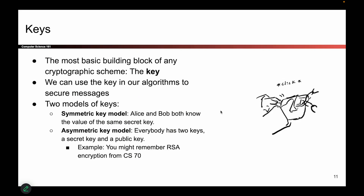The most basic building block in any scheme you'll ever see is something called a key. A key is simply a piece of data — a bunch of ones and zeros — and it's a secret value that we use to secure our messages. There are two ways to build keys. One is the symmetric key model, where Alice and Bob both have a secret key that nobody else knows. Alice knows it, Bob knows it, nobody else in the world knows it.